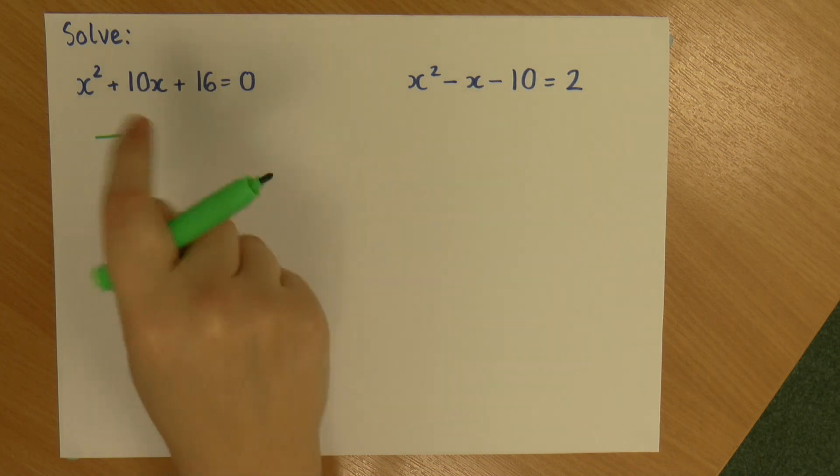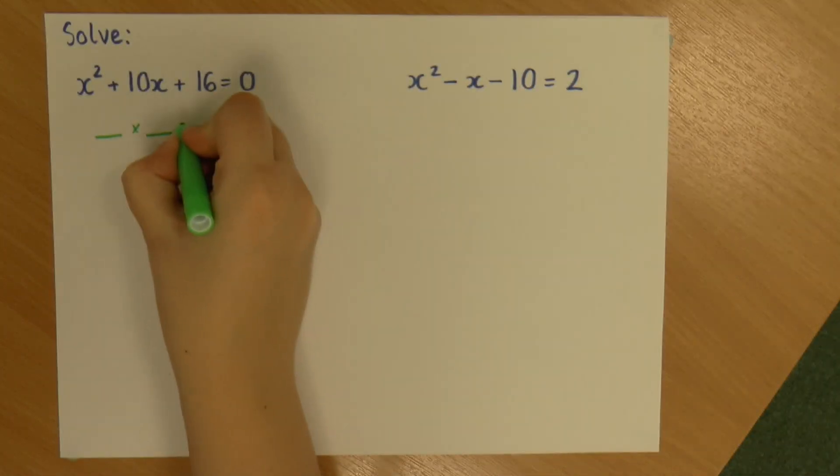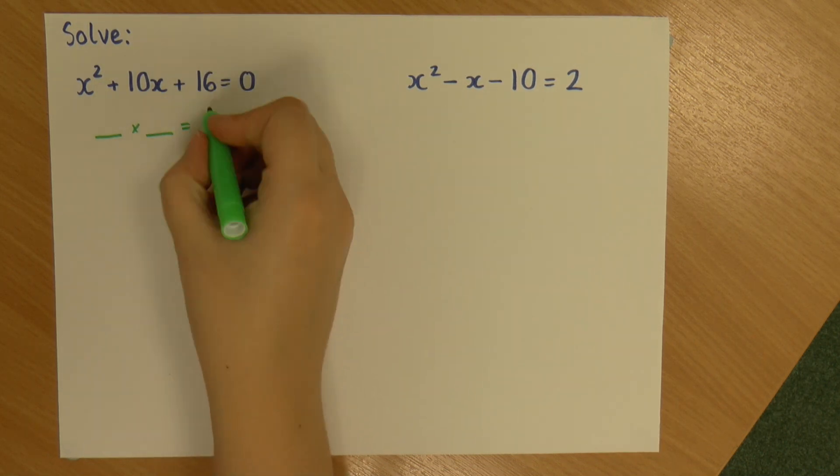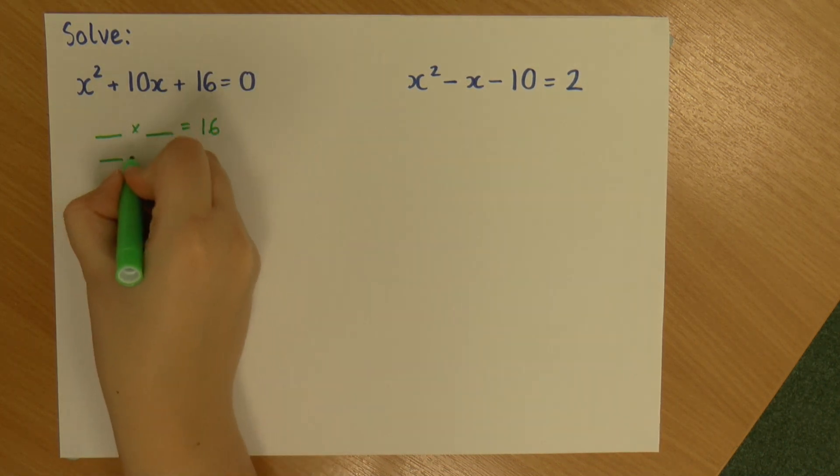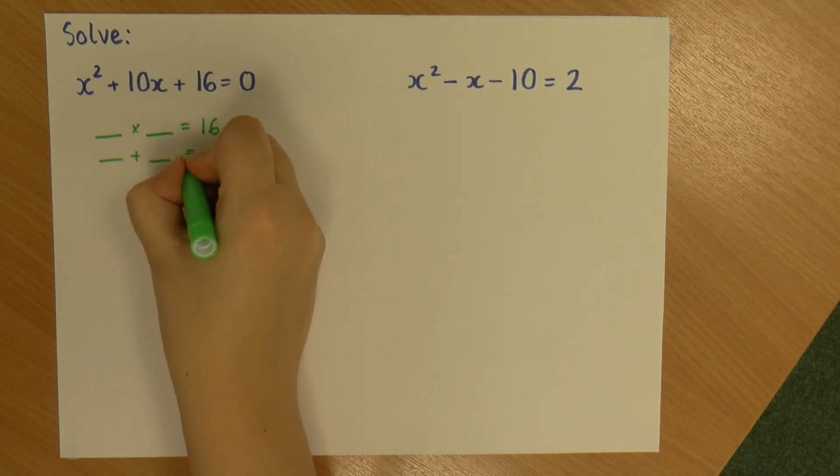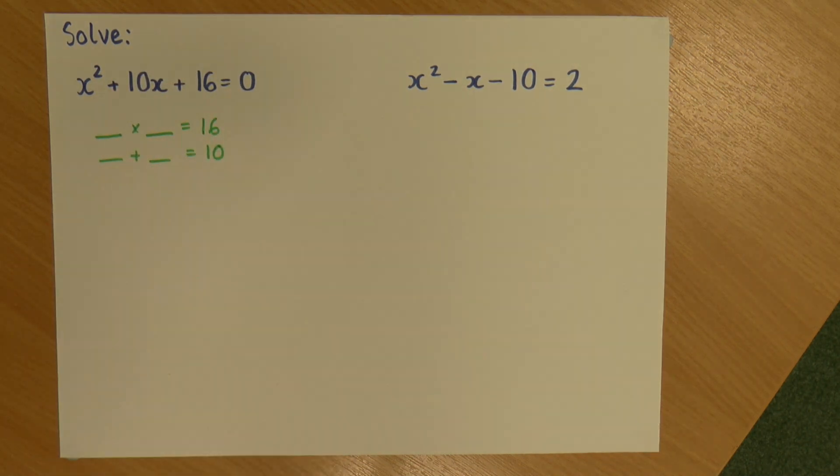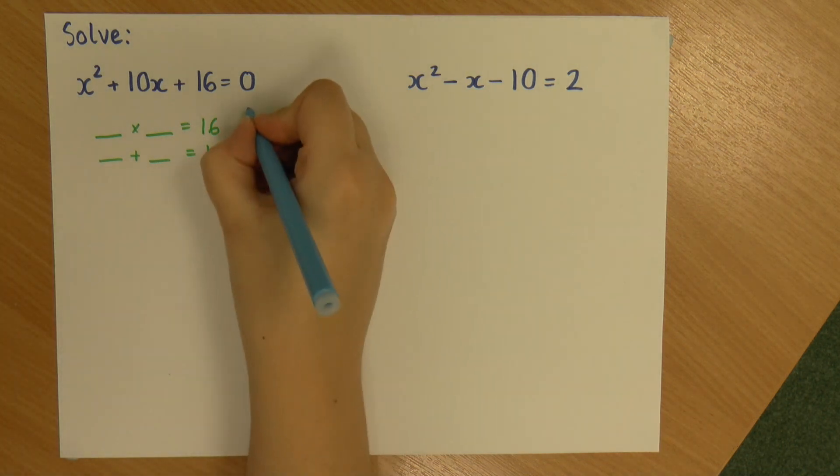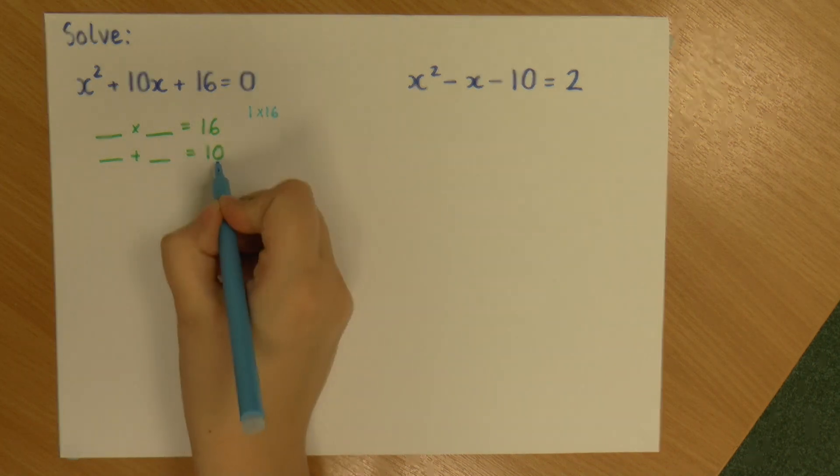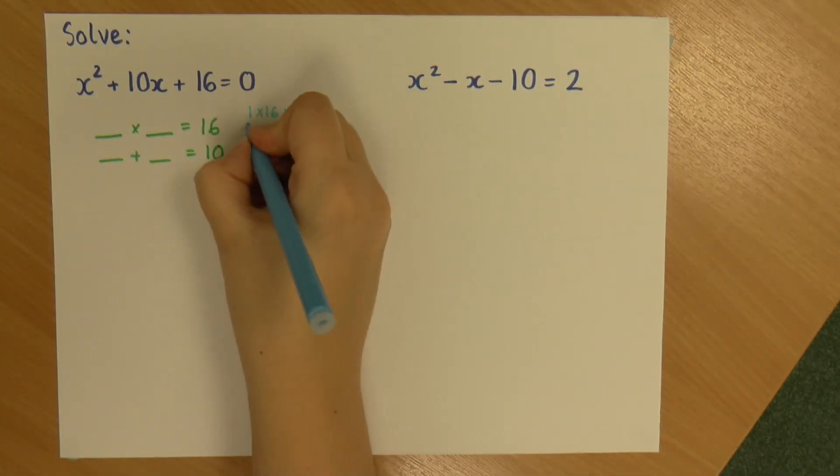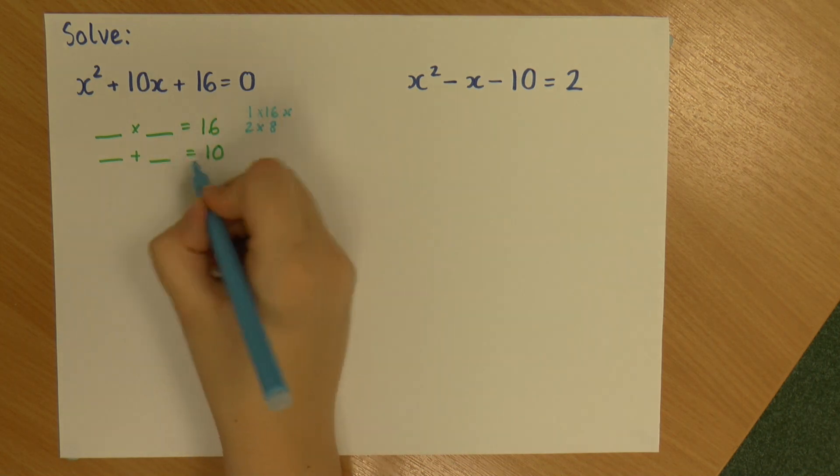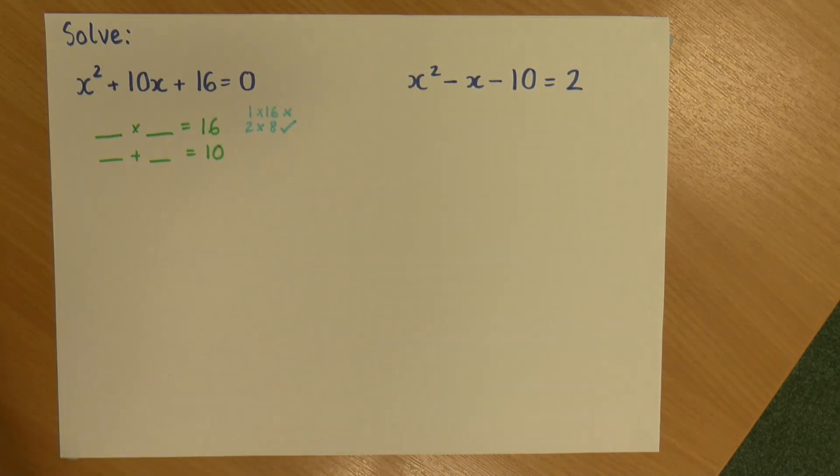So remember to factorise our quadratic equations, I look for two numbers that give me the end number and add to give me the middle. So a pair of numbers that multiply to give me 16 and add to give me 10. So what multiplies to give me 16? So it's 1 and 16, but they don't add to give me 10. 2 times 8, they do add to give me 10, so it's 2 and 8.